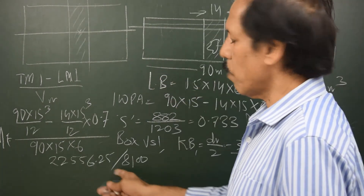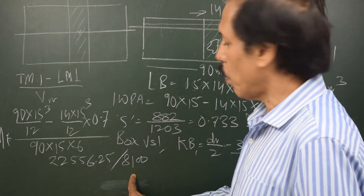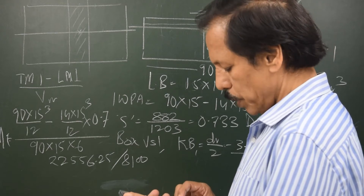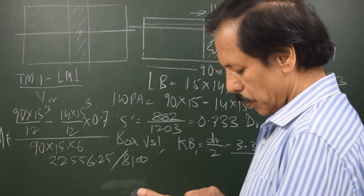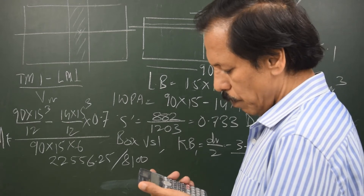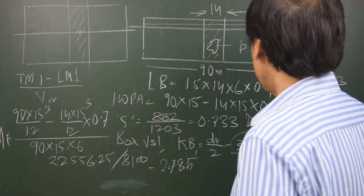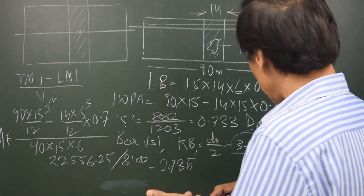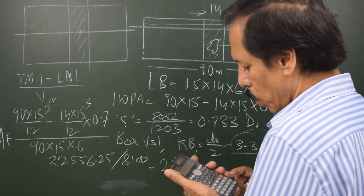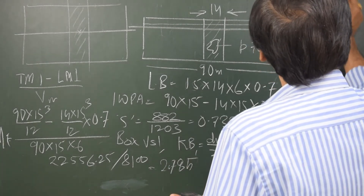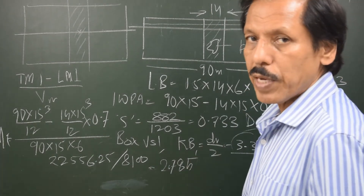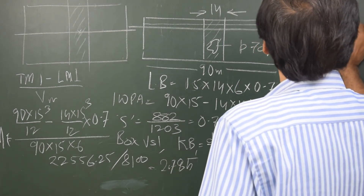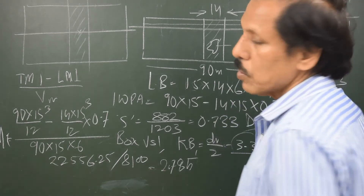Residual moment of inertia divided by intact underwater volume of 8100 cubic meters gives BM = 2.785 meters. So KB = 3.366 and BM = 2.785, giving KM = 6.151 meters. Subtracting KG of 5.1 gives GM = 1.051 meters.